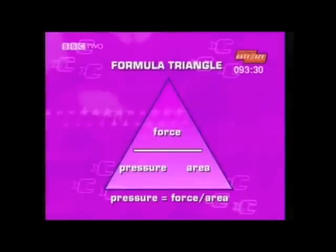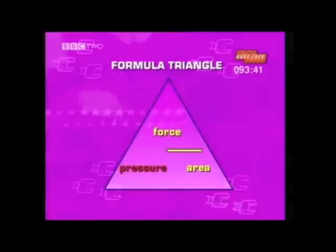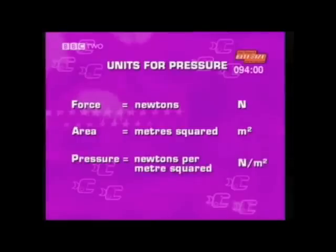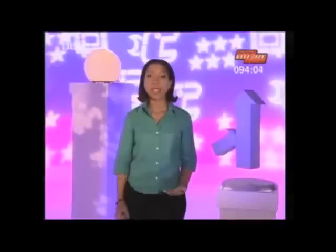Pressure is dependent on the force that is pushing and the area over which it pushes. The relationship between all three — pressure, force, and area — can be summarized with this formula: pressure equals force divided by area. We can turn this into a formula triangle: pressure equals force divided by area; force equals pressure times area; area equals force divided by pressure. Remember your units: force is measured in newtons (N), area in meters squared, so pressure is measured in newtons per meter squared.